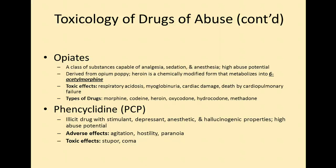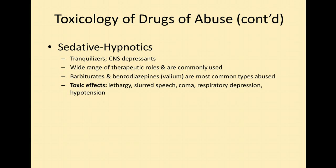PCP — phencyclidine — is an illicit drug with stimulant, depressant, anesthetic, and hallucinogenic properties, making it a multi-action drug with very high abuse potential. It can cause agitation, hostility, paranoia, and even stupor and coma as toxic side effects. The next category is sedatives and hypnotics, used as tranquilizers or central nervous system depressants. The barbiturates and benzodiazepines — such as Valium — are the most common types abused. Effects include lethargy, slurred speech, coma, respiratory depression, and low blood pressure.